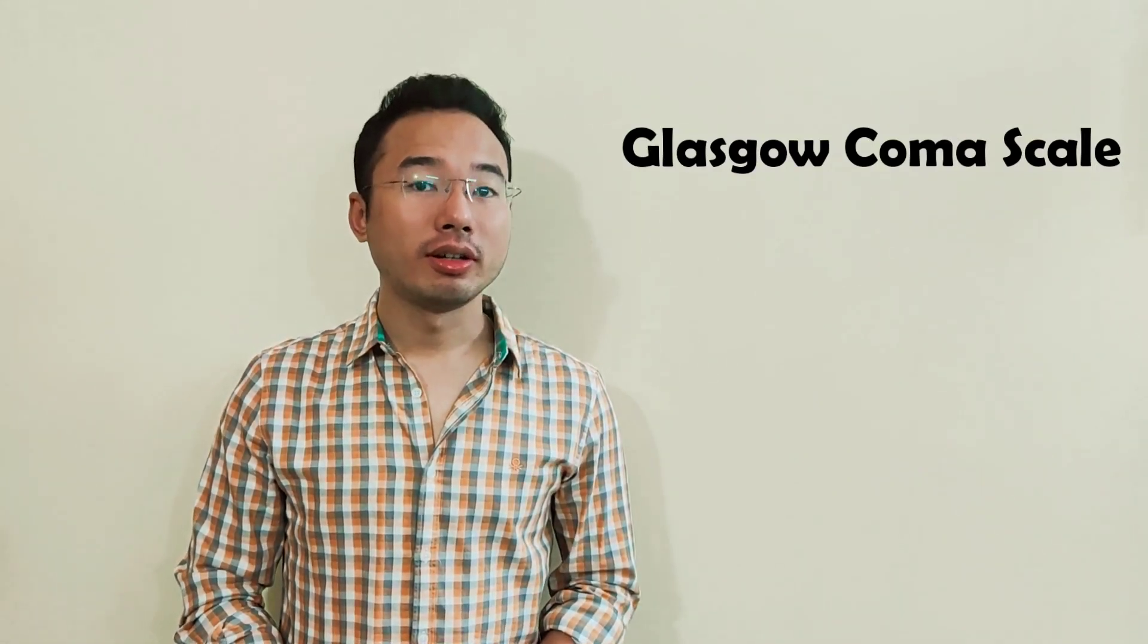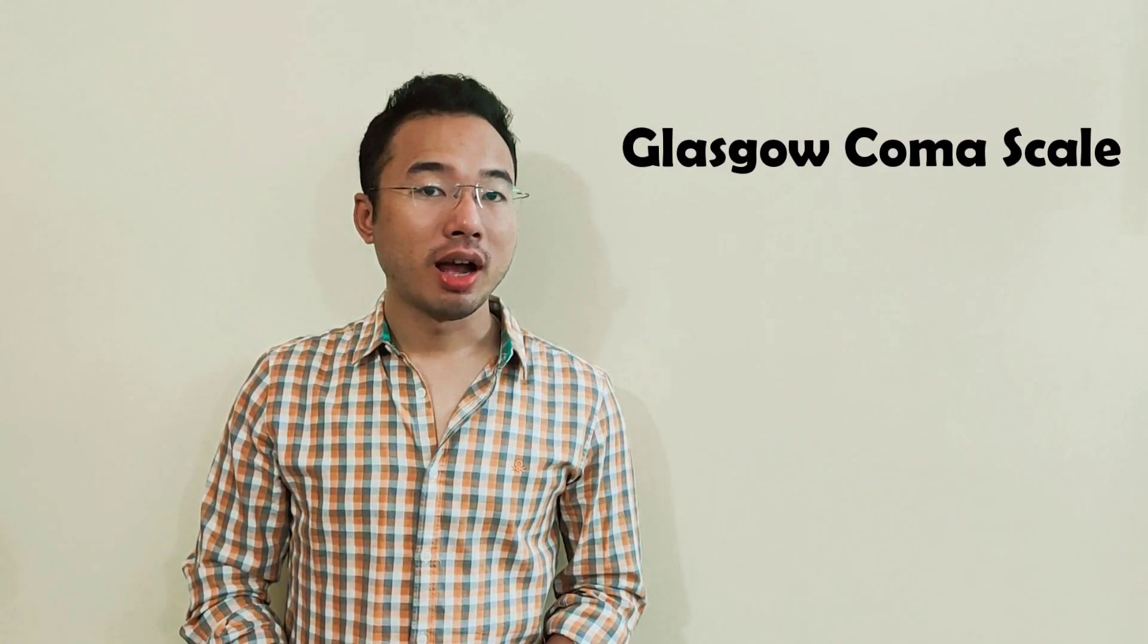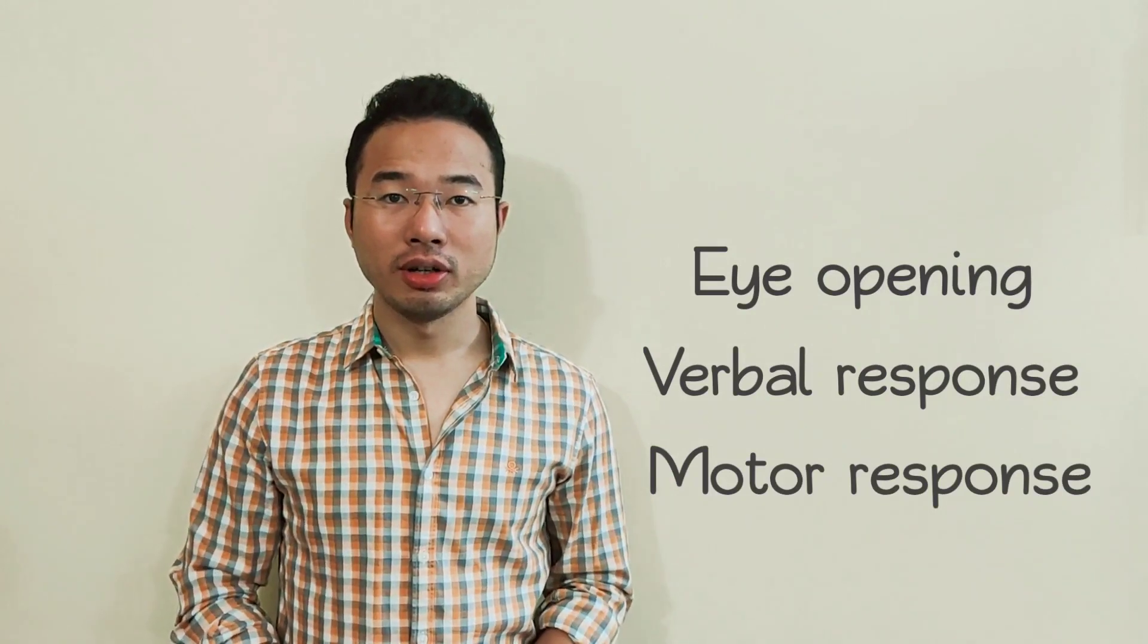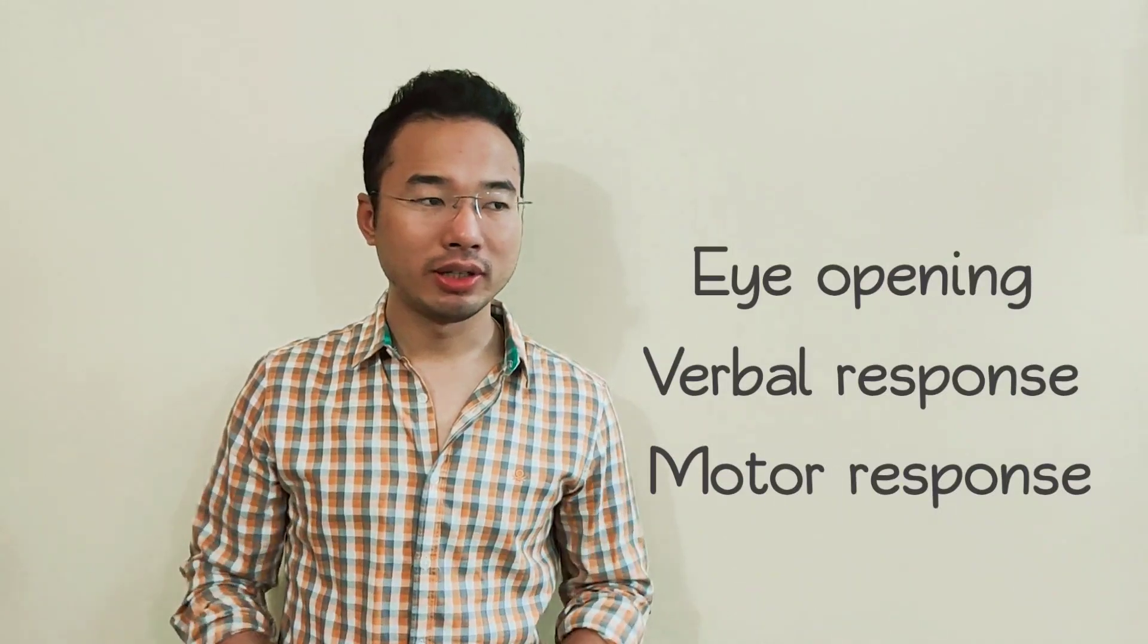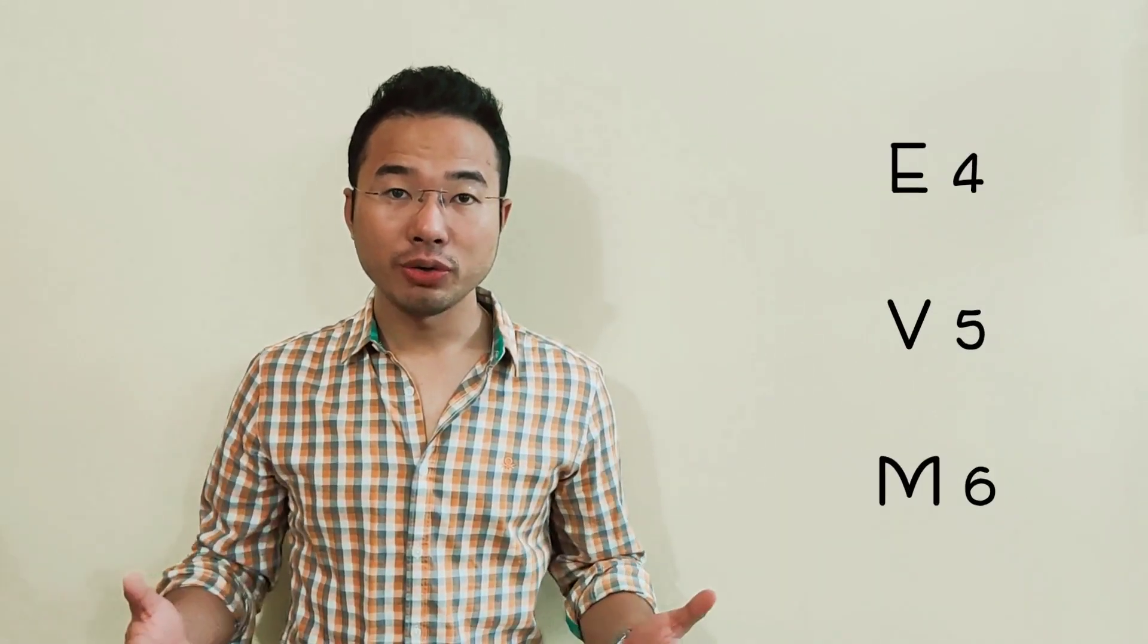So there are three components in the Glasgow Coma Scale. It's the eye opening, the verbal response, and the motor response. Earlier I used to get confused. Is it V6, M5, and E4? Or is it E4, V5, M6? Yes, it's E4, V5, M6. And how do we remember that?